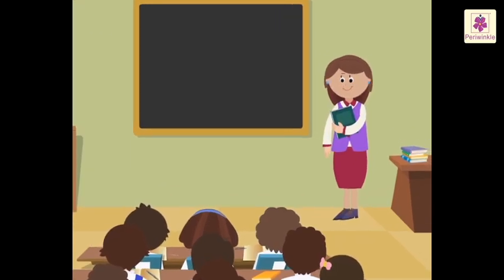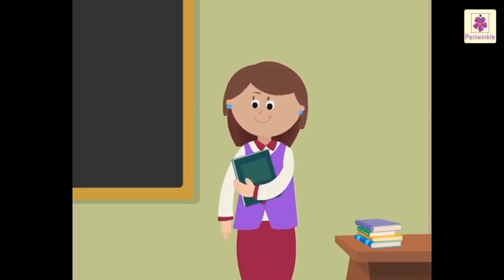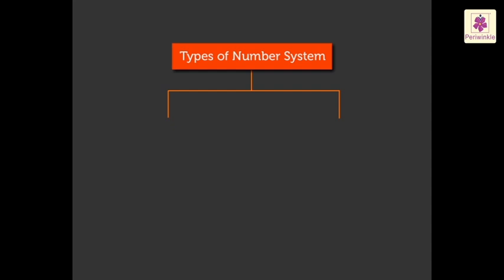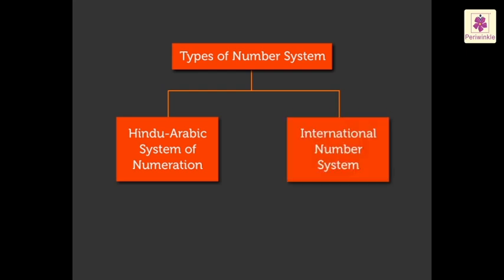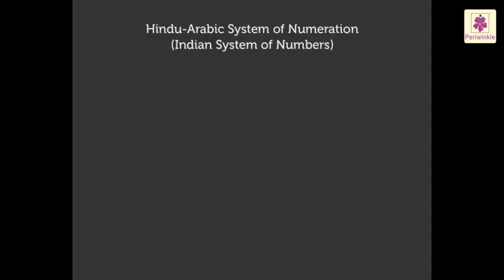Hello kids! We have already learned that there are two types of number systems: one, the Hindu-Arabic system of numeration, and two, the International number system. Today, let us learn more about them. Let us begin with the Hindu-Arabic system of numeration. Look at this table.